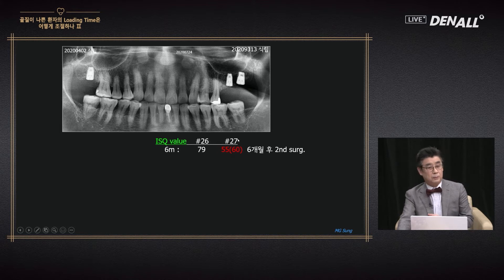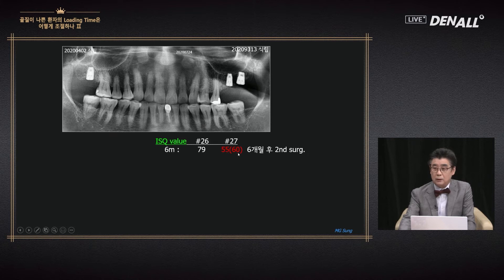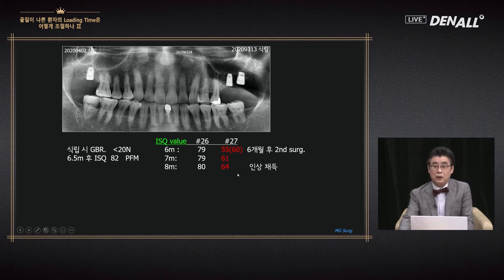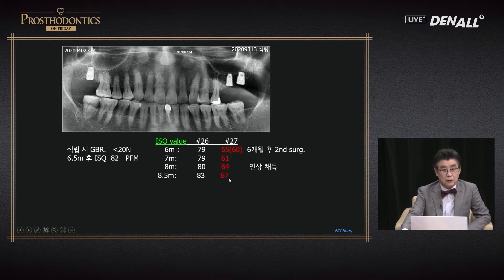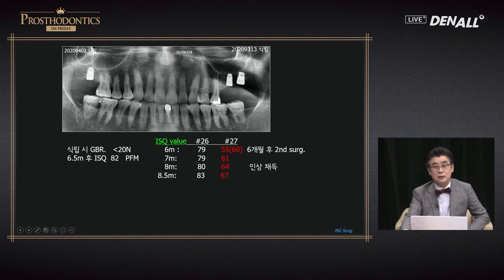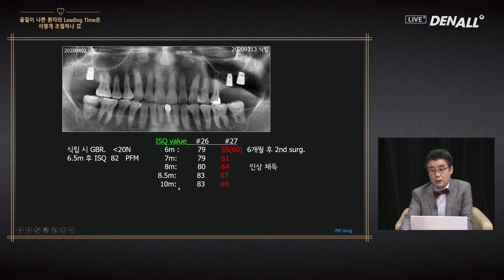After second surgery, Osstell Mentor sometimes gives two values. At ISQ 55, the implant was still very loose — we let it be. After two more months, still very low. We took impressions after eight months so the patient wouldn't become suspicious of inactivity. But ISQ was in the 60s — even with hand force you could take it out easily. We let the patient wait again, but put something in for primary stability so the patient was okay. These were the numbers as the months went by, and I found that action needed to be taken.